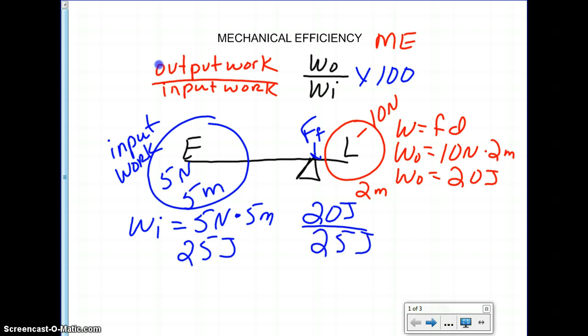So now we have our formula. We've plugged in our output work right here, our input work right here, and we're going to actually divide that out and multiply times 100. When all is said and done, 20 divided by 25 is 0.8 and 0.8 by 100 is going to be 80.